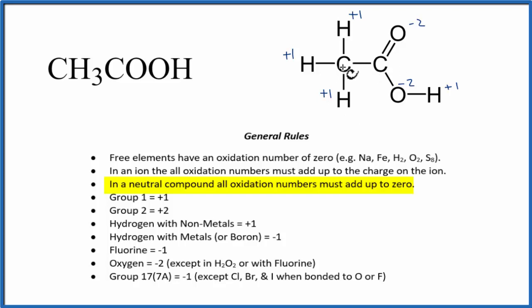But the carbons are different because they're bonded to different elements. So let's look at this carbon here first, and then we'll check this one out. So this carbon here is bonded to three hydrogens with plus one charges. So its oxidation number needs to be a minus three.